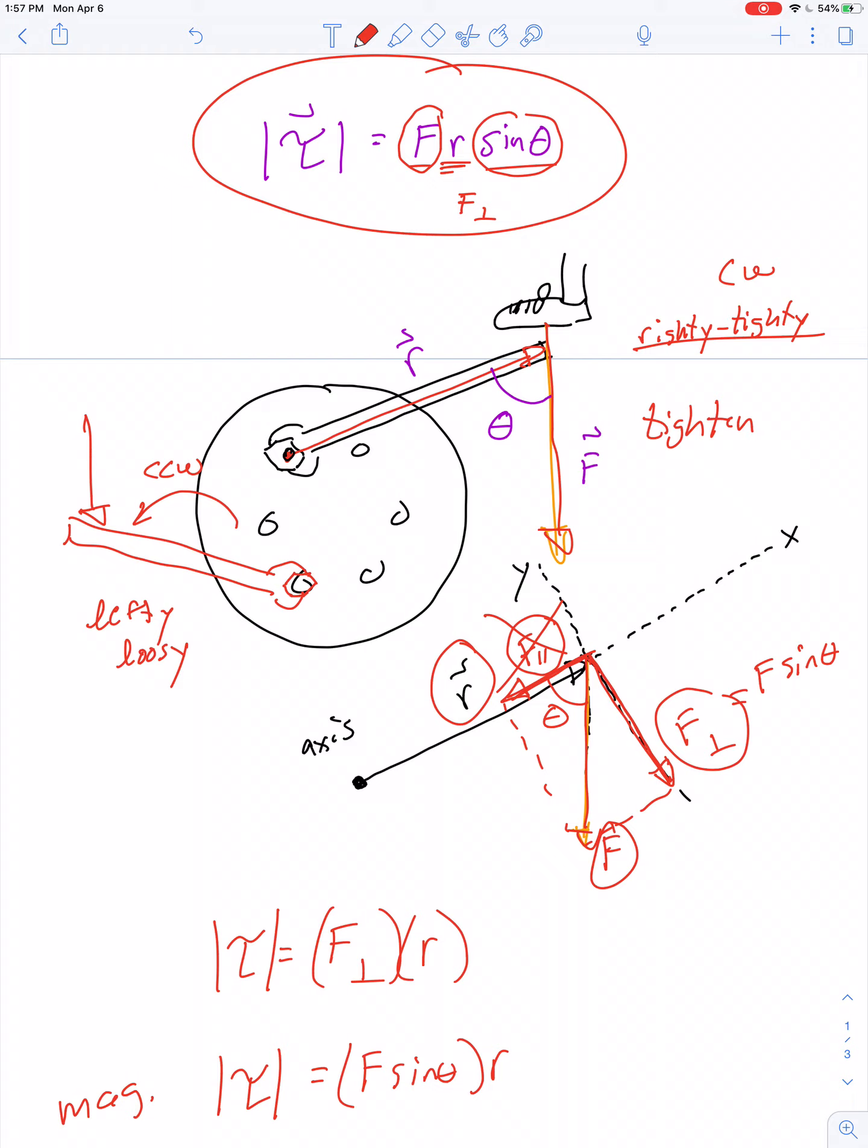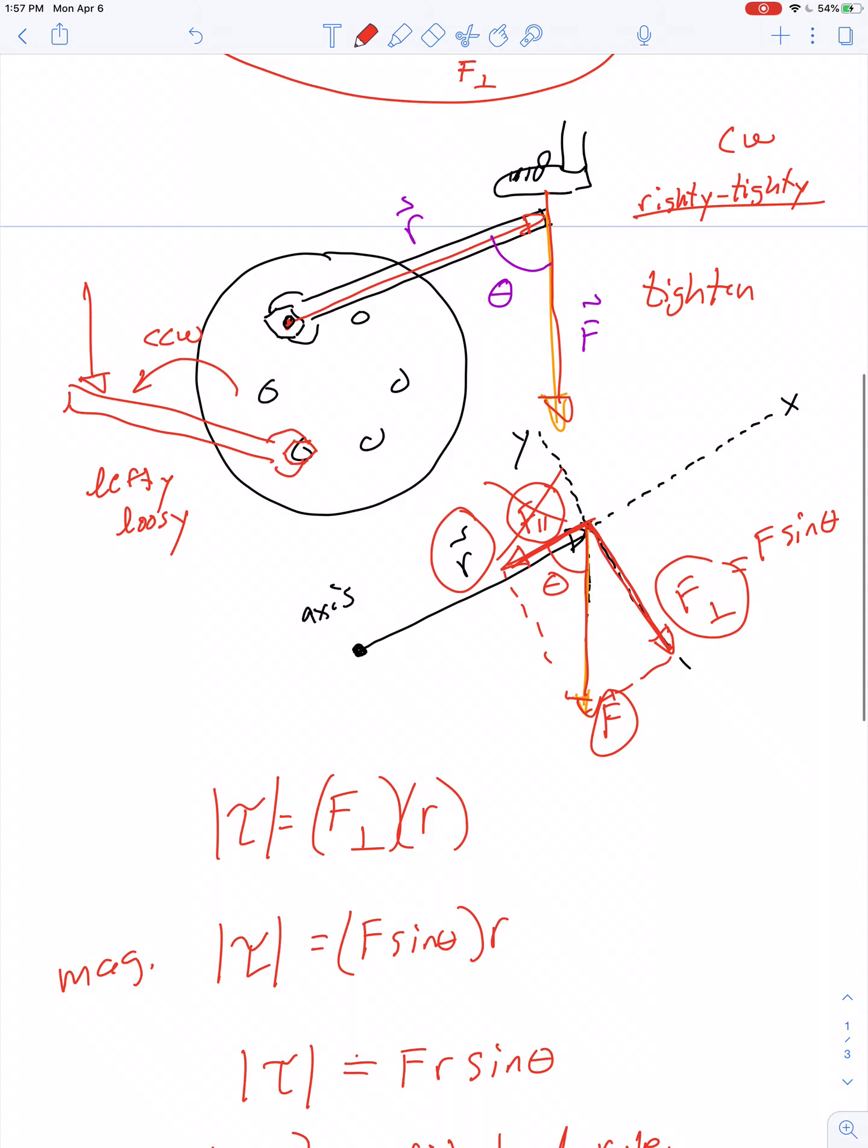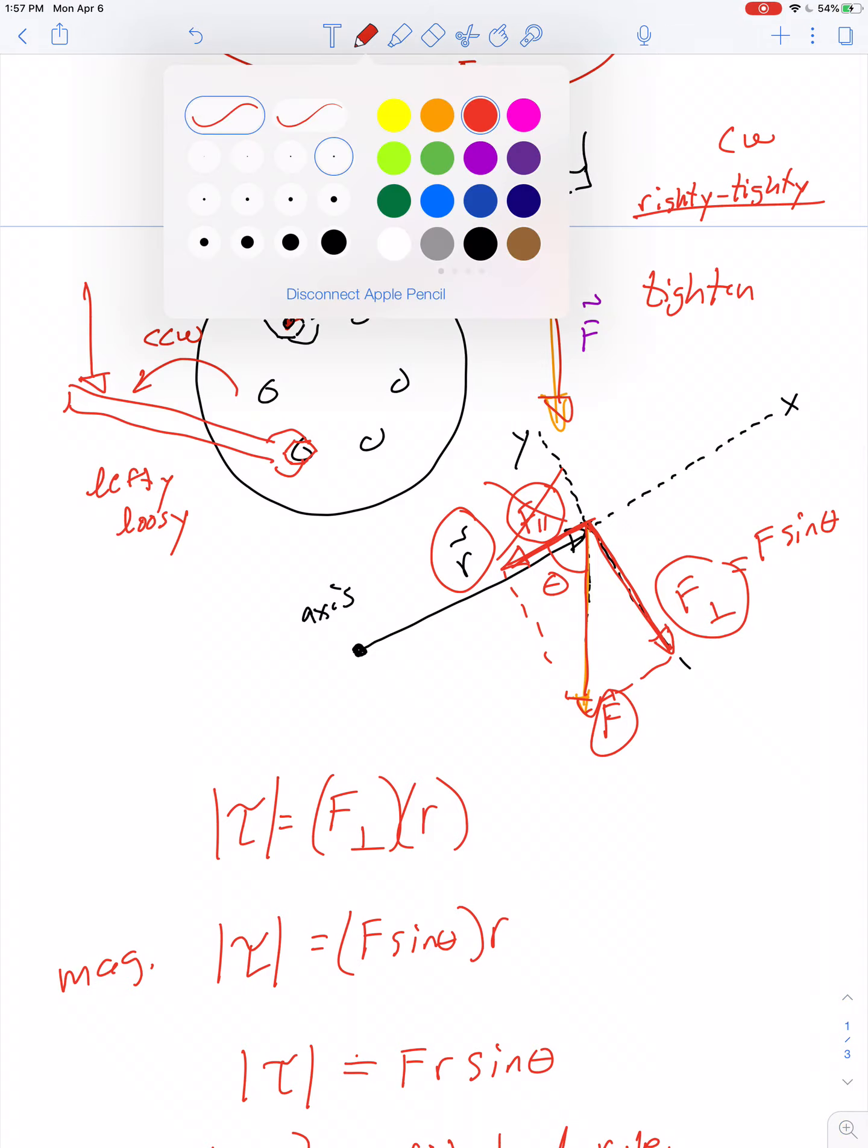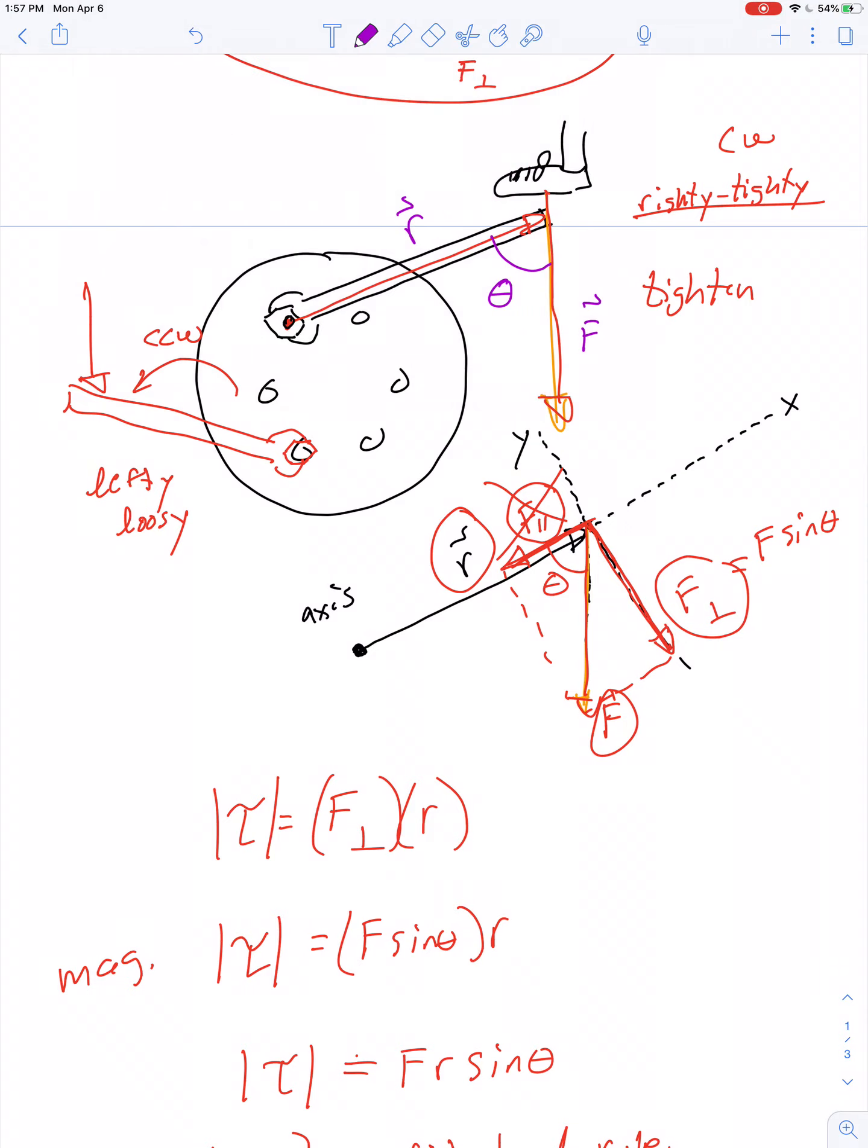Clockwise rotation. If you use your right hand and curl the fingers in a clockwise direction, your thumb would point away from you—that's the direction of the torque vector. In our example of putting the lug nut back on after you've replaced your tire, the clockwise rotation is a torque vector that points into the page.